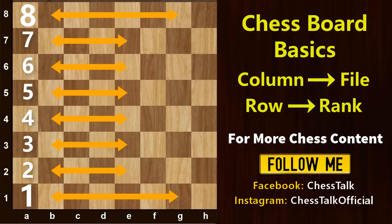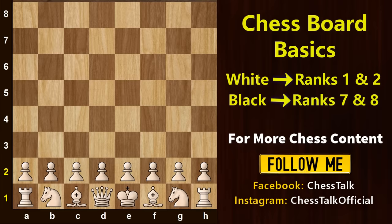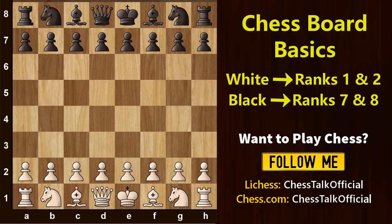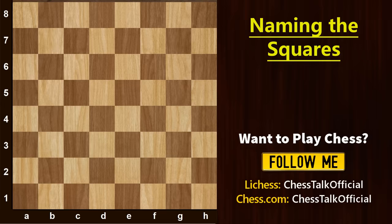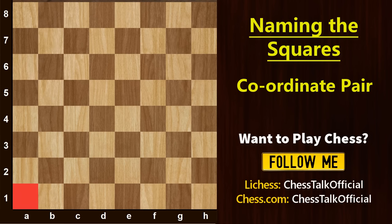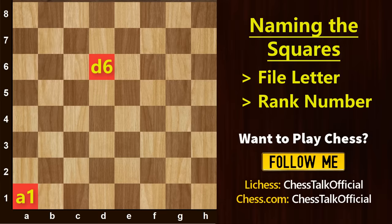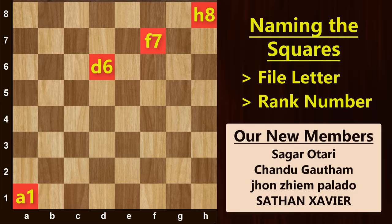Remember, at the start of a chess game, all the white pieces are placed on ranks 1 and 2, and all the black pieces are placed on ranks 7 and 8. Based on this concept of files and ranks, every square on the chessboard is assigned a unique name and identity. Each square is simply named after its coordinate pair, which means this square on the lower left-hand corner is known as A1. We identify it by putting together the file letter and rank number. Similarly, this square is called D6, since it belongs to the D file and the 6th rank. This square will be called F7, and this one is H8. In this way, we can easily assign a name to all 64 squares on the chessboard.